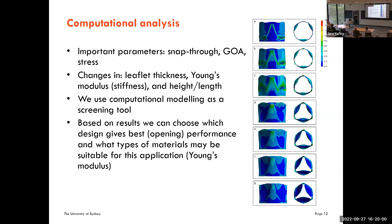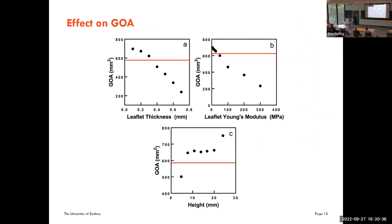This computational study, also included in our recent paper, uses FEA as a screening tool to choose which design gives the best performance. We focused on opening performance and examined key parameters: snap-through, geometric orifice area, and stress. We varied leaflet thickness, Young's modulus, and leaflet height. Increasing leaflet thickness and Young's modulus both decrease the geometric orifice area for the same applied pressure, while increasing leaflet height increases the geometric orifice area.